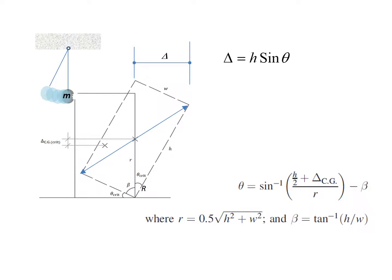Given the amount of lifting of the rectangular block at the center of gravity, by the use of simple geometry, the value of the horizontal displacement delta of the rectangular object can be found as shown.